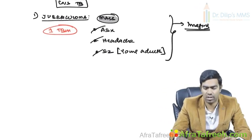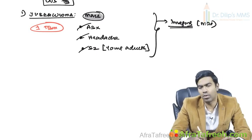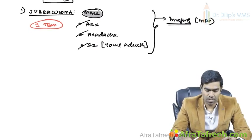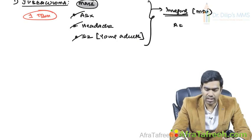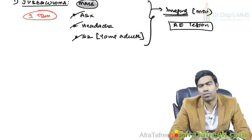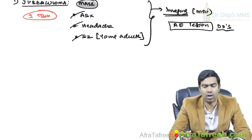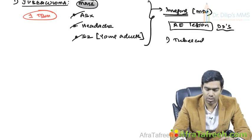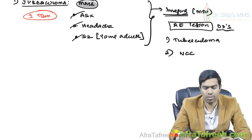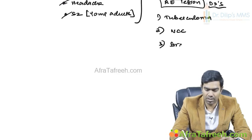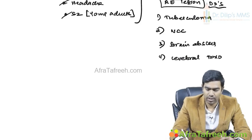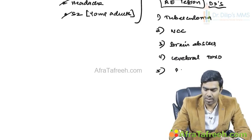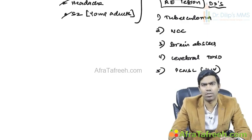The characteristic imaging technique we are going to use is an MRI. When you do imaging, you are going to see a ring-enhancing lesion, which is very characteristic - not only of tuberculoma but also has many differentials. Especially when you do contrast CT or contrast MRI, you will see this ring-enhancing lesion. The differentials include: first, tuberculoma; second, neurocysticercosis; third, brain abscess; fourth, cerebral toxoplasmosis; and fifth, primary CNS lymphoma especially in HIV patients. Coccidioidomycosis also exists but is very rare, especially in India.